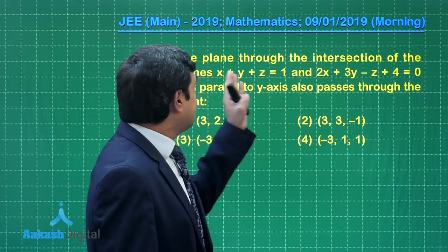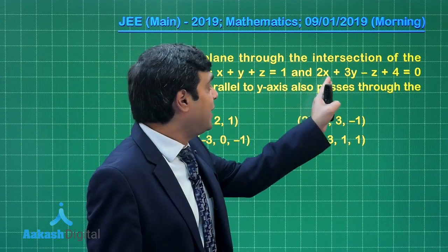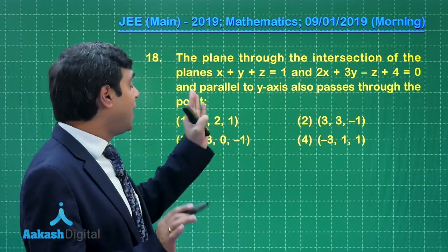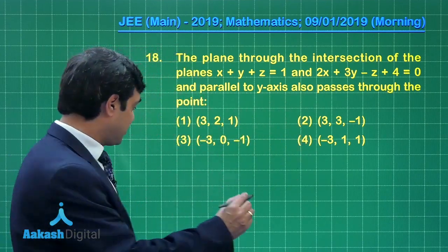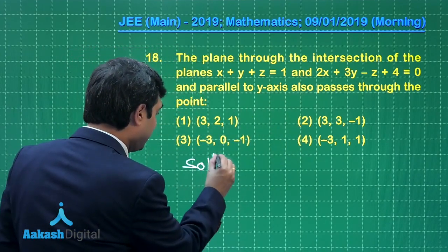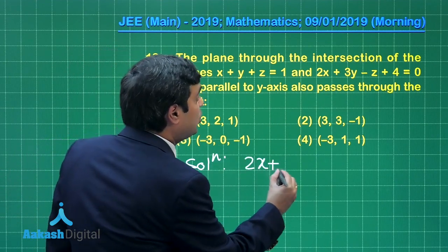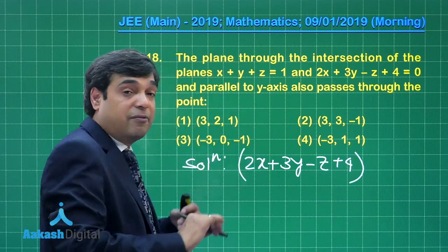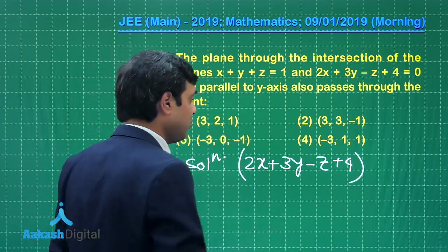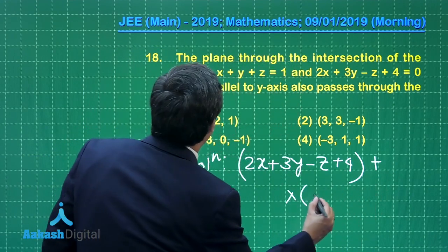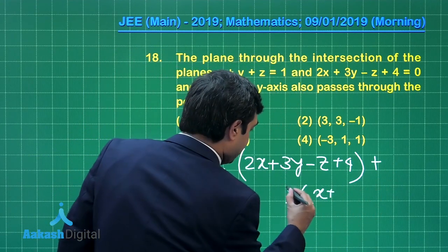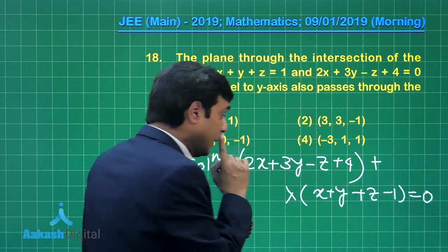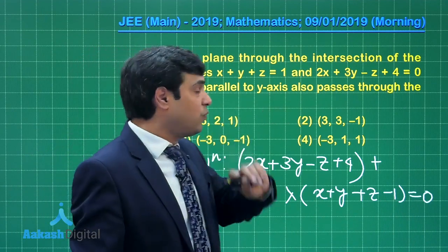The plane through the intersection of planes x+y+z=1 and 2x+3y-z+4=0, and parallel to y-axis, also passes through. A simple one from 3D. Let us start. I am writing family of planes: P₁ + λP₂ = 0, which gives (2x+3y-z+4) + λ(x+y+z-1) = 0.